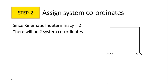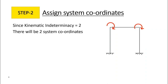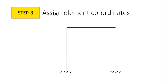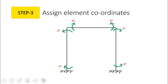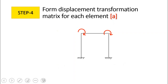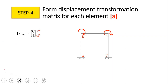Step 2 is to assign system coordinates at the locations of degrees of freedom: one at B and another at C, both being rotations. Step 3 is to assign element coordinates — each element has coordinates one-star through six-star. Step 4 is to form the displacement transformation matrix for each element. Taking AB as element 1, BC as element 2, and CD as element 3: for AB, applying unit rotation at B gives one-star a value of 0 and two-star a value of 1, so the transformation matrix for AB is [0, 1].